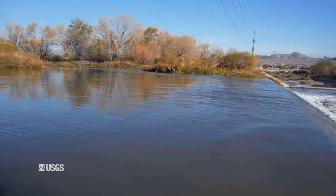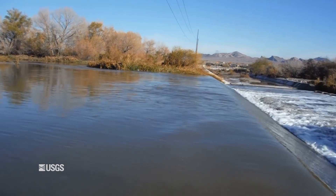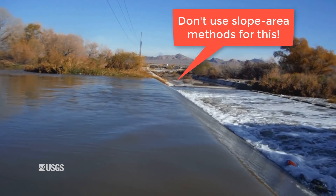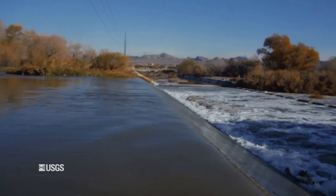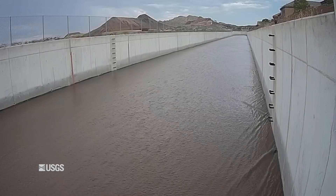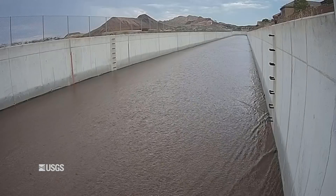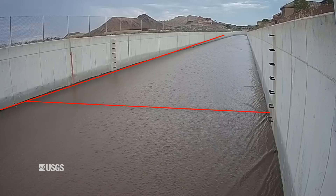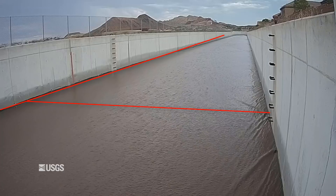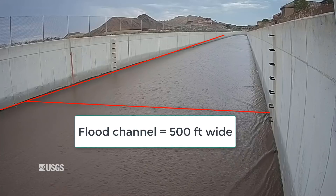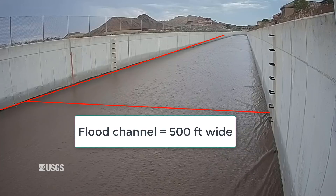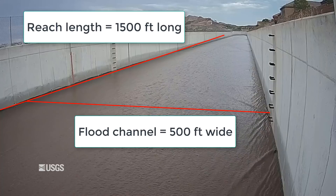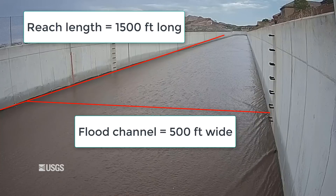For example, don't use slope area methods when you have a weir or road embankment in the middle of a reach. The total length of the reach should be at least three times the width of the flood peak channel. If your flood channel is about 500 feet wide, your total reach length should be about 1,500 feet at a minimum.